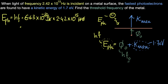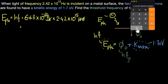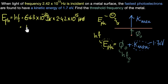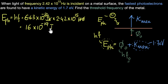Let me bring in my calculator. 6.63 × 2.42 gives me approximately 16.04, which I'll round to 16. So 16 × 10⁻³⁴ ⁺ ¹⁵ = 16 × 10⁻¹⁹ Joules. That is the energy of the photon.